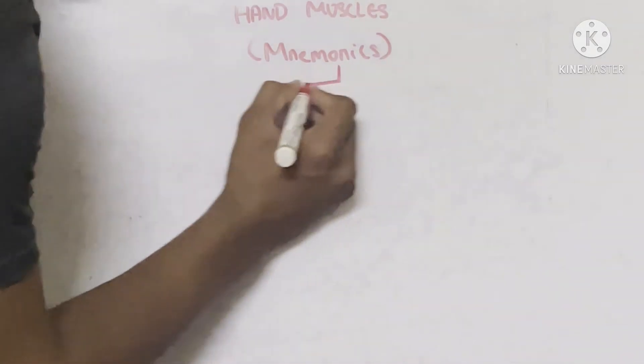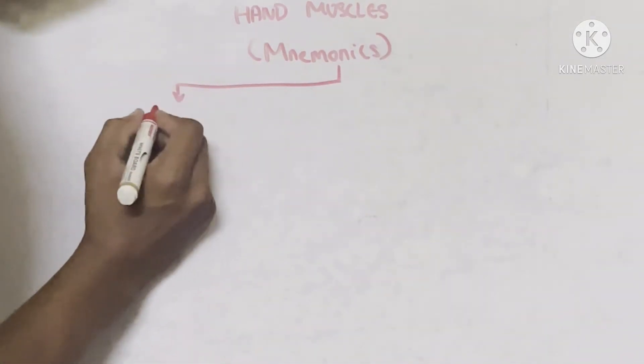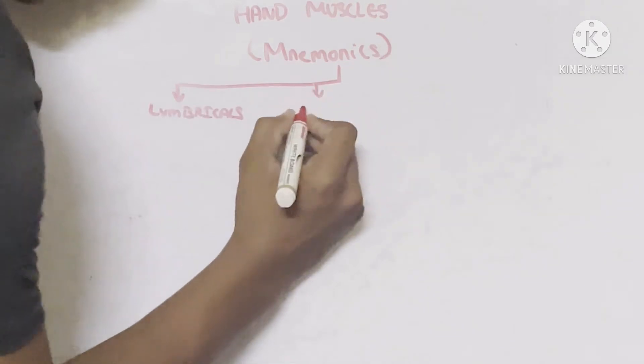I will give a quick recap on this topic. If we take hand muscles, we are going to study hand muscles under four sub-categories: lumbricals, interossei, thenar, and hypothenar.